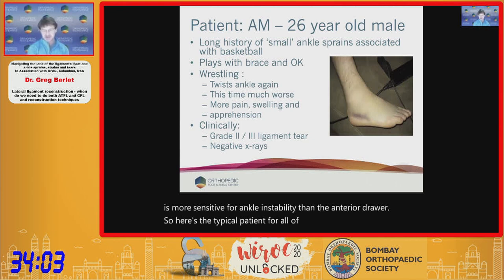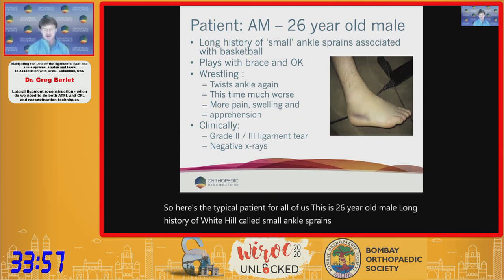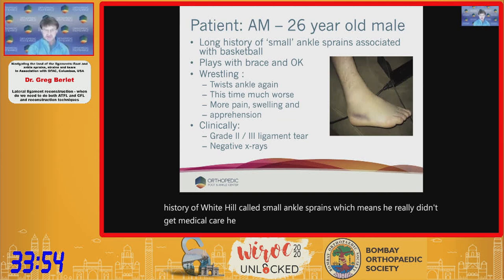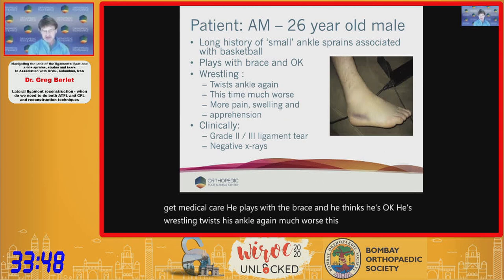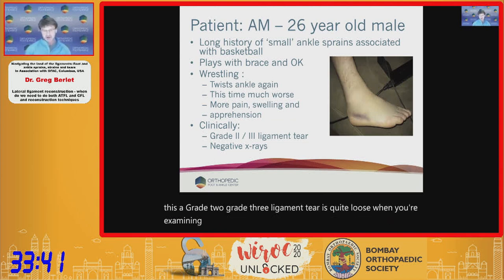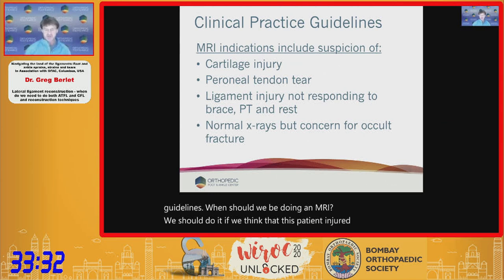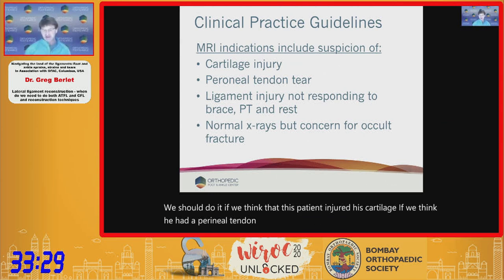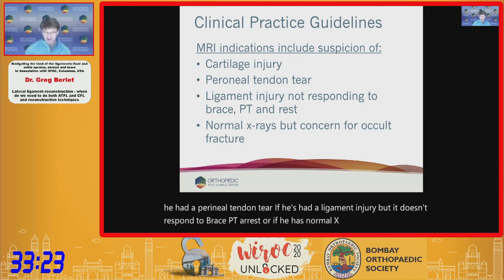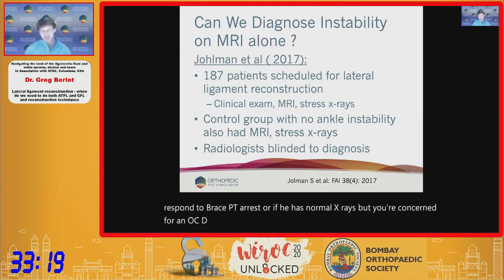A typical patient is a 26-year-old male with a long history of small ankle sprains — he played with a brace and thought he was okay. He wrestles, twists his ankle again much worse, and clinically you call this a grade 2–3 ligament tear. His x-rays are negative. Per clinical practice guidelines, MRI is indicated if you suspect cartilage injury, peroneal tendon tear, a non-responsive ligament injury, or an OCD or occult fracture.